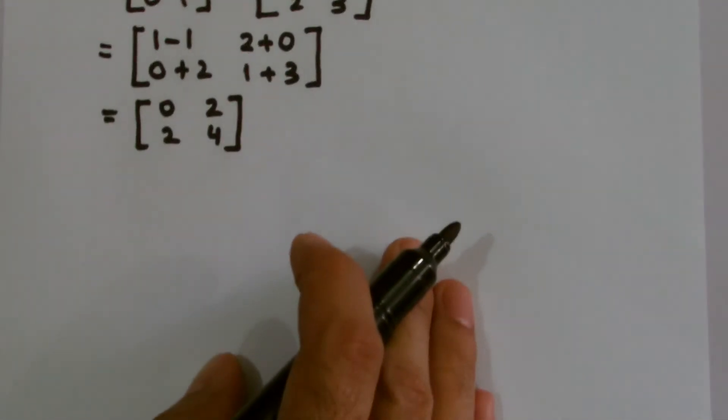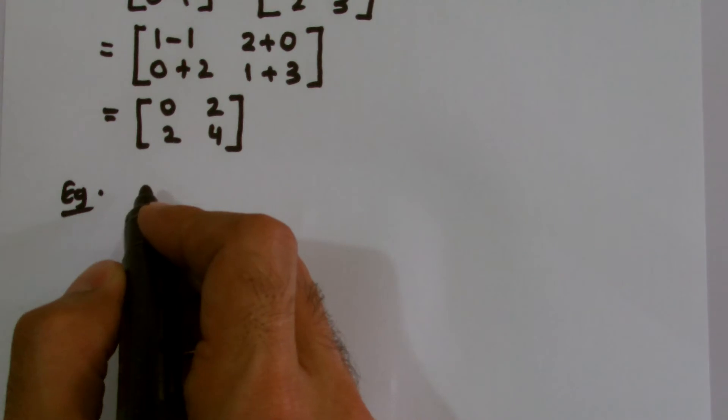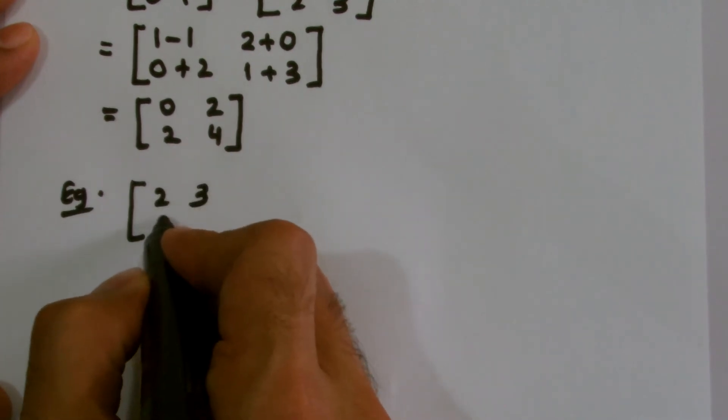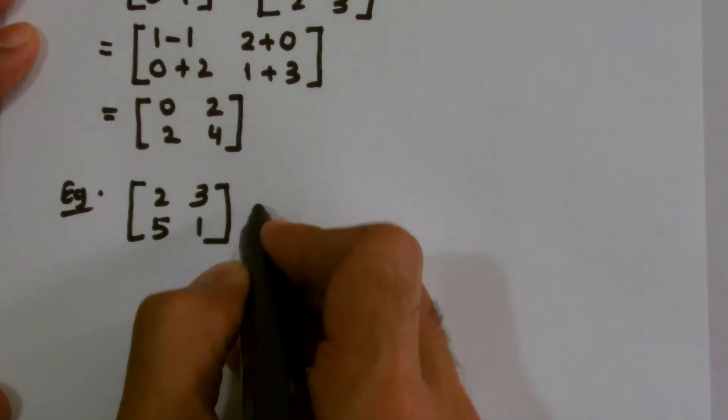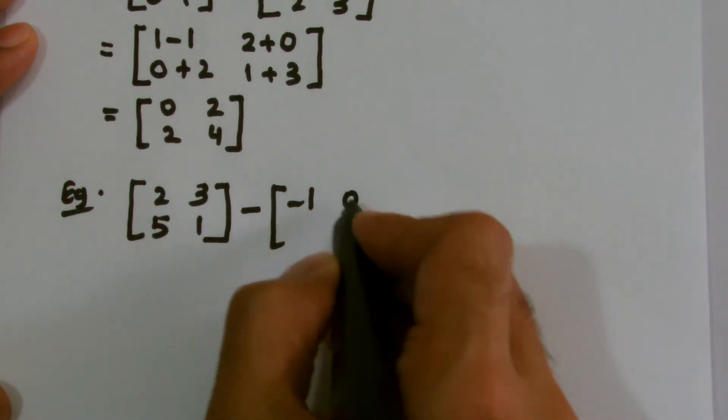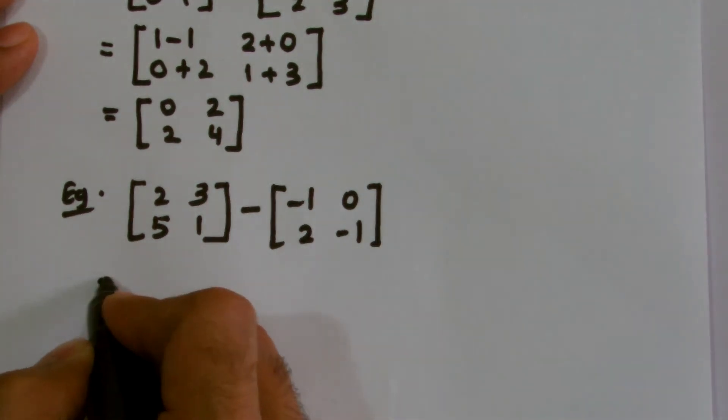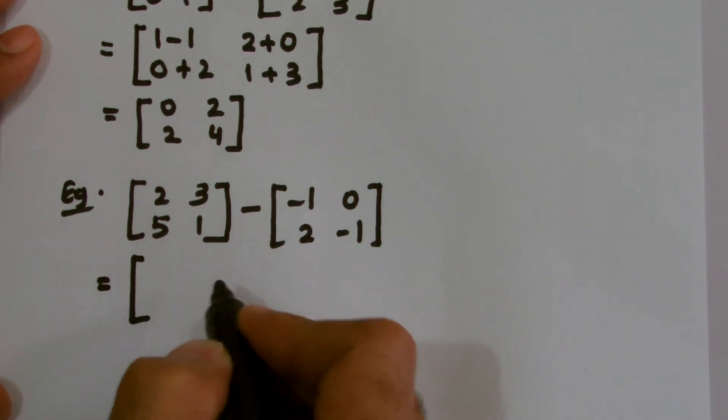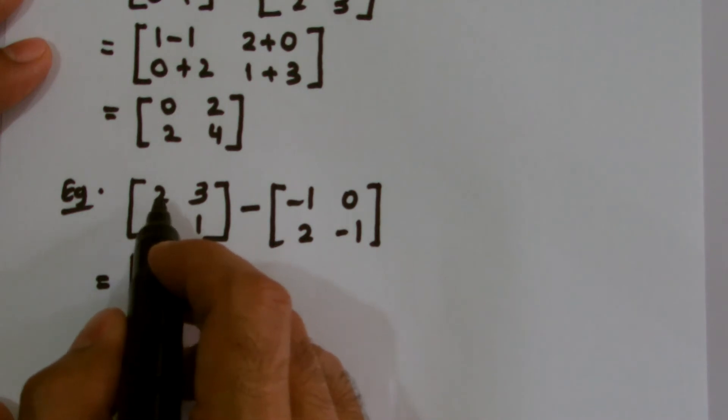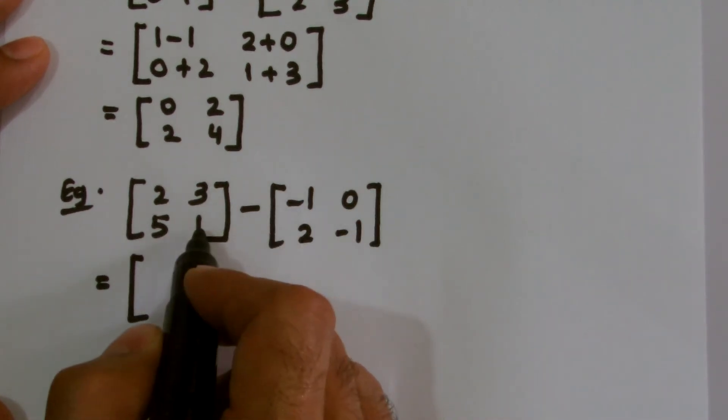Similarly, if I'm looking to subtract, I consider another two matrices. For example, I've got 2, 3, 5, 1 and I'm subtracting another matrix of same order minus 1, 0, 2, minus 1. We'll do the subtraction the very same way. Elements at the same position will be subtracted. I would be subtracting minus 1 from this 2, 0 from this 3, 2 from this 5, and negative 1 from this positive 1.